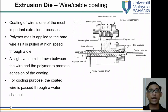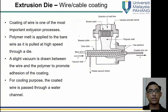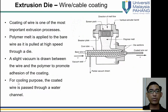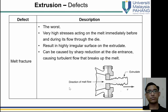For wire and cable coating, there are two layers — the wire inside and a plastic coating on the outside. Wire coating is the most important extrusion process. Polymer melt is applied to the bare wire as it is pulled at high speed through the die. A slight vacuum is drawn between the wire and polymer to promote adhesion of the coating, making it stick more strongly to the wire. For cooling, the coated wire is passed through a water tank.